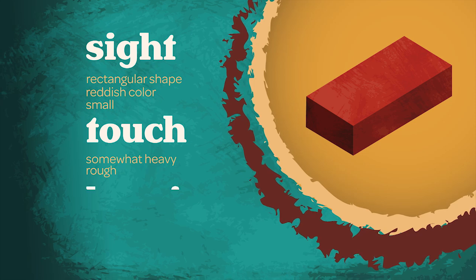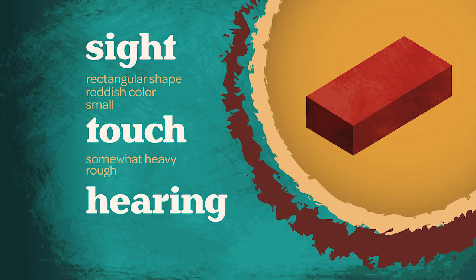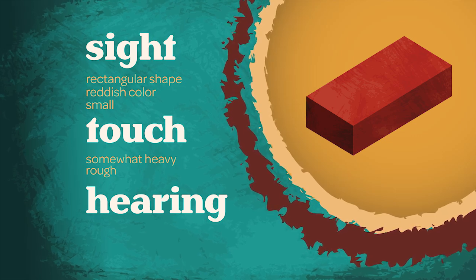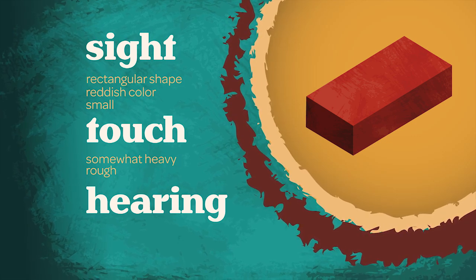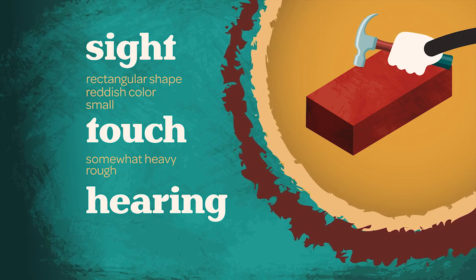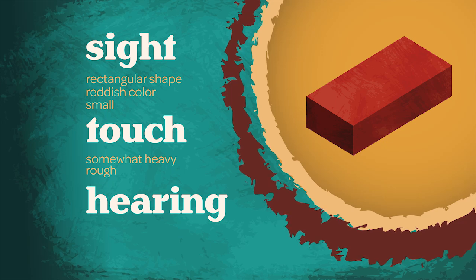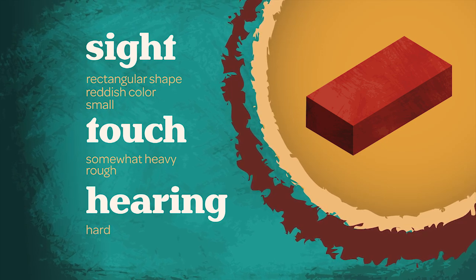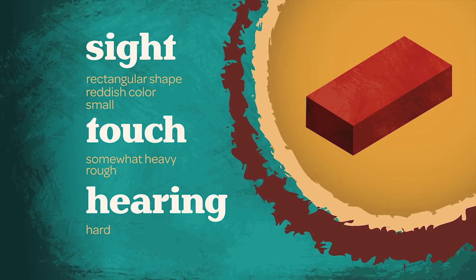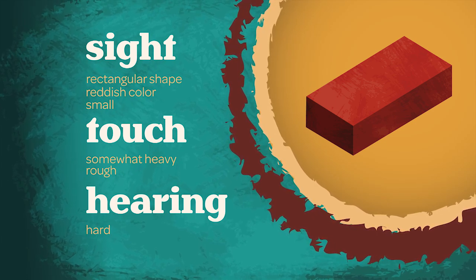Your sense of hearing can also help you make an observation about the object's texture. Tapping the object on a table or hitting it with a hammer makes a sound. This tells you that the object is hard. All of these observations help you recognize that this object is a brick.